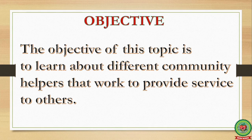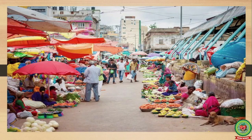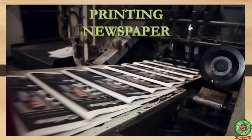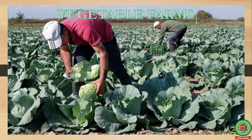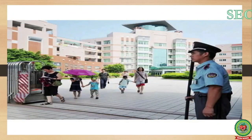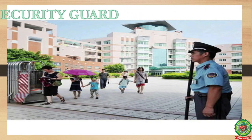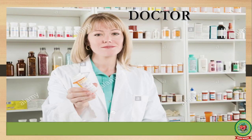We need many things in our everyday life and we can't bring all of our required things from their origin source — like newspaper from press, vegetables from farms, packed food from factories — and we can't do all works ourselves, like securing our society or prescribing medicine when ill.